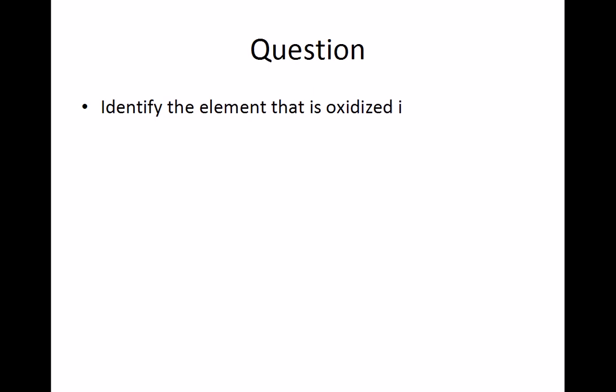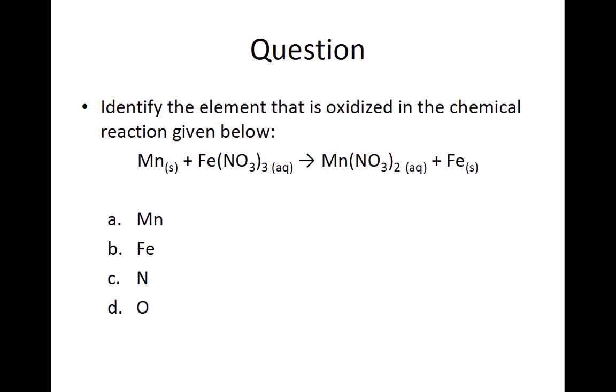Identify the element that is oxidized in the chemical reaction given below. Manganese metal plus iron 3 nitrate yields iron metal plus manganese 2 nitrate.